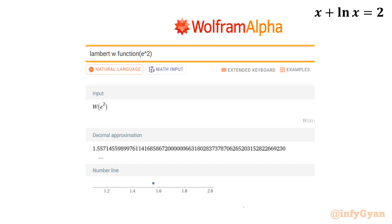Verification through Wolfram Alpha confirms that W(e²) equals approximately 1.71455. I hope you liked this video. Thank you so much for watching — do not forget to like, share, and subscribe. Bye bye till the next video. Good luck.